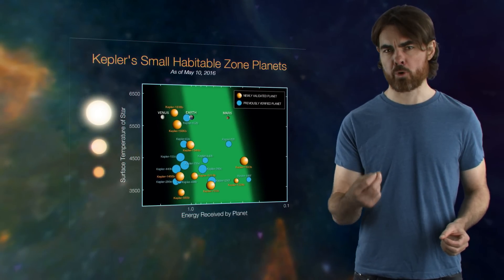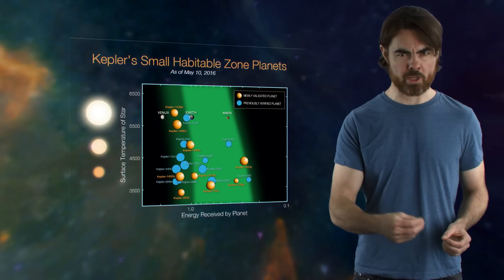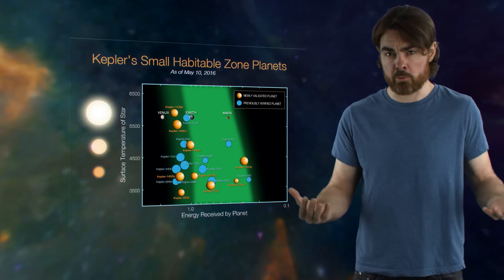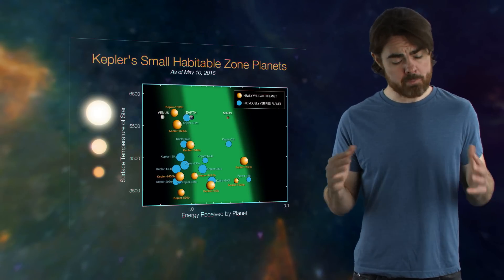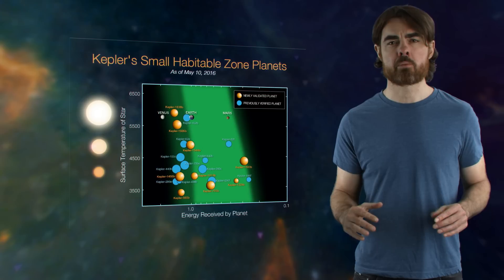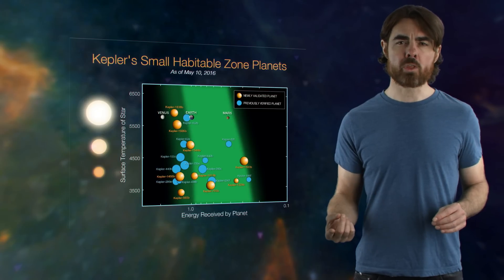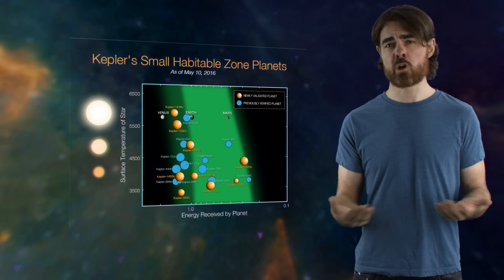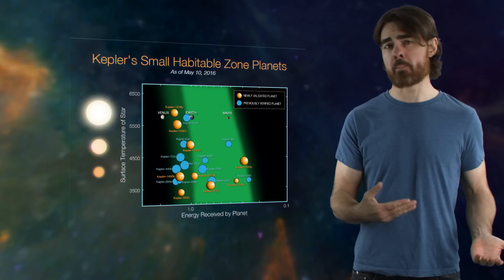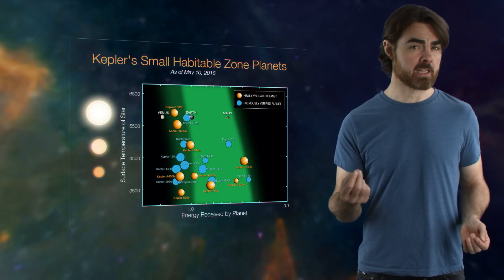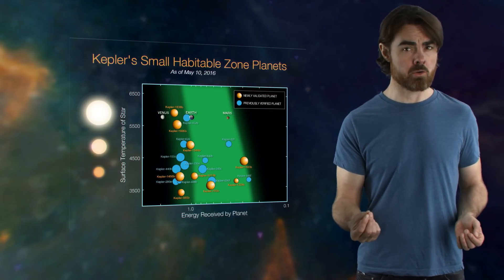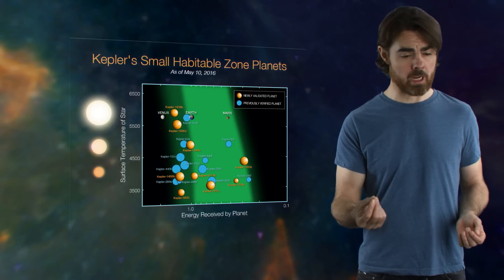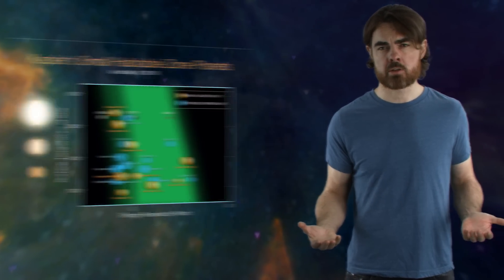So 40 billion rocky worlds capable of supporting liquid water, which may be an essential ingredient for life. We call these habitable planets, although we have no idea how many are inhabited. Around 11 billion of those are Earth-like planets around sun-like stars, with such a tight constraint on the astrophysics.